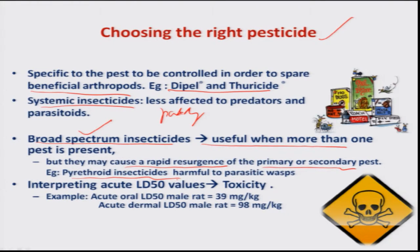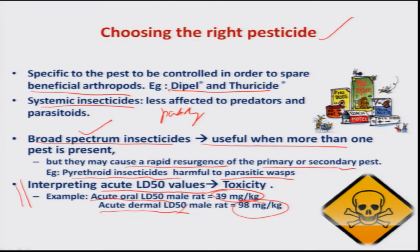Another consideration while choosing the pesticide is the toxicity level. Acute LD50 values indicate the toxicity. Acute oral LD50 values are more toxic than acute dermal toxicity values. For example, a value of 39 mg/kg indicates high toxicity to higher animals including human beings, whereas higher LD50 values indicate lesser toxicity to higher animals.